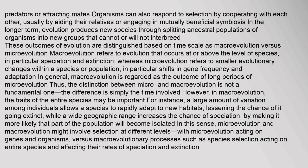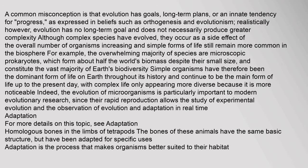However, in macroevolution, the traits of the entire species may be important. For instance, a large amount of variation among individuals allows a species to rapidly adapt to new habitats, lessening the chance of it going extinct, while a wide geographic range increases the chance of speciation. A common misconception is that evolution has goals, long-term plans, or an innate tendency for progress, as expressed in beliefs such as orthogenesis and evolutionism. Realistically, evolution has no long-term goal and does not necessarily produce greater complexity.